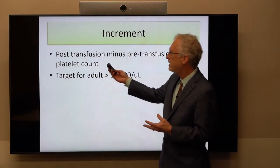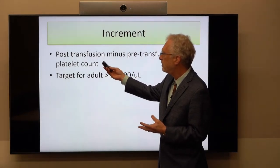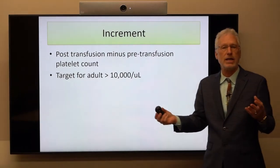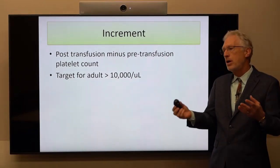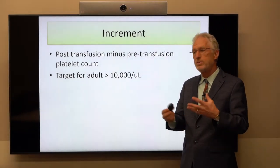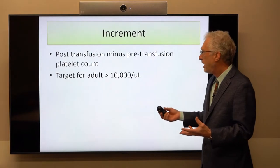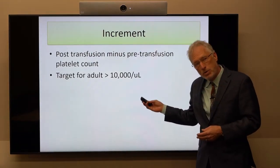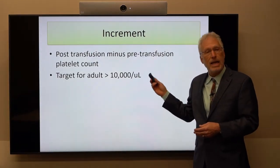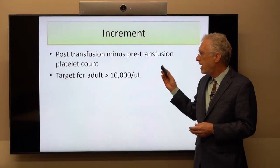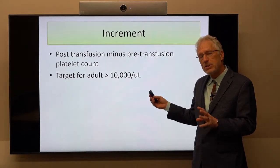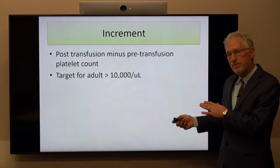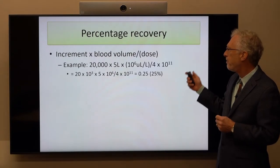To calculate the increment, you look at the post-transfusion platelet count and subtract the pre-transfusion platelet count. For example, if they start with a platelet count of 8,000 and it goes up to 12,000, the increment is 4,000. As a rule of thumb, in the average-size adult, a satisfactory transfusion is around an increment of 10,000 per microliter.